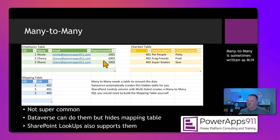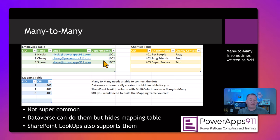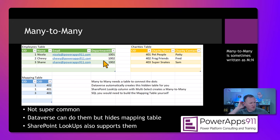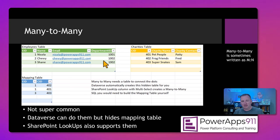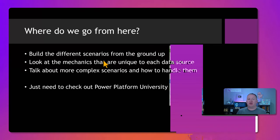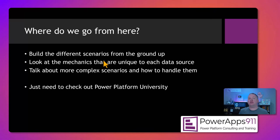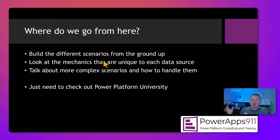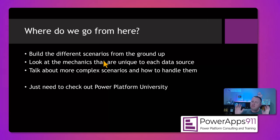Many-to-many doesn't come up very often. If it does, creating your own mapping table is the way to go — there are also some other approaches. Each data source has its own little quirks; SQL, for example, requires you to create and manage those primary and foreign key columns yourself. There's also a bunch of additional concepts like referential integrity, but this is an intro level — you've got enough now to go build and think about your data model.